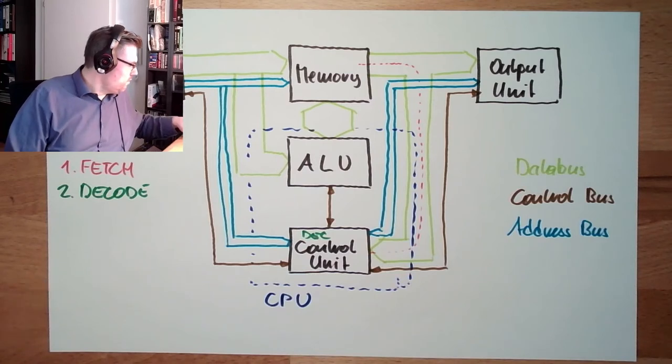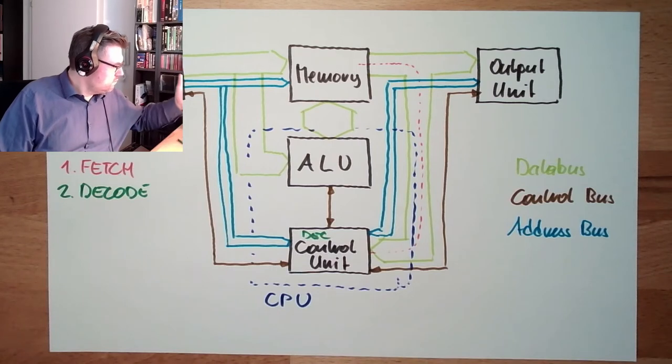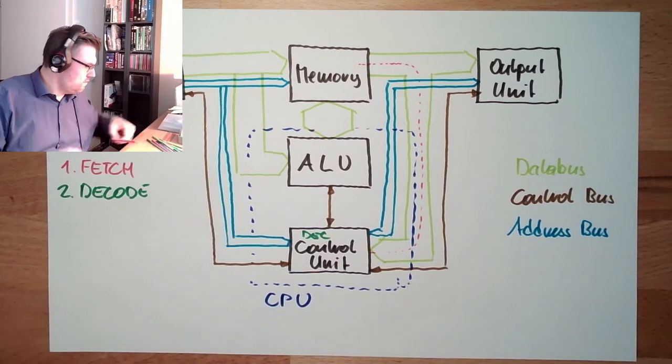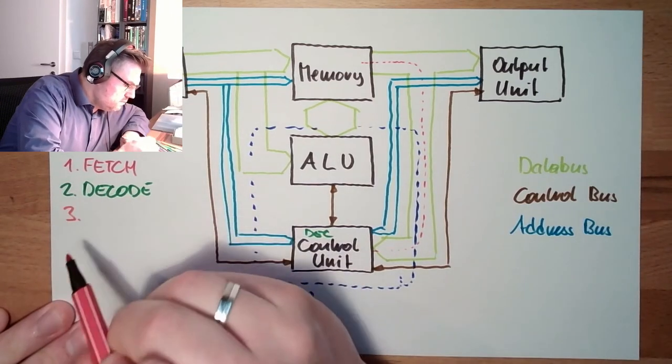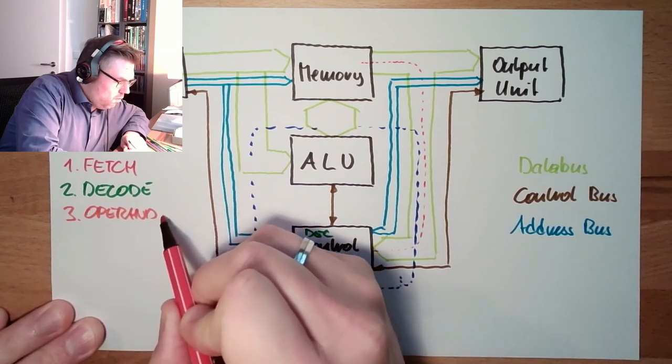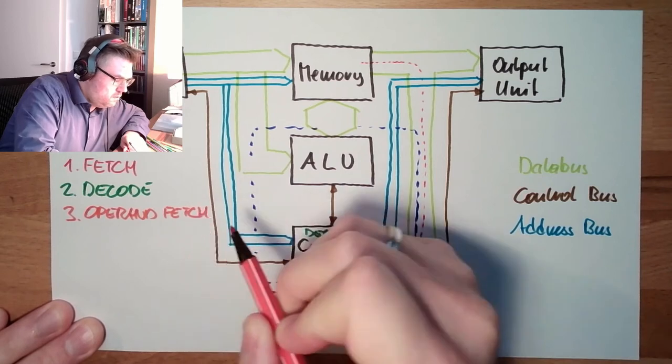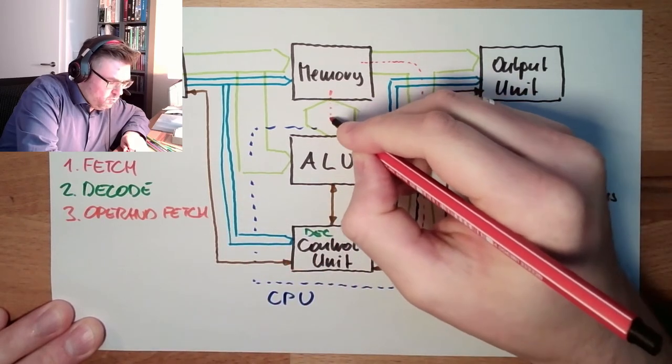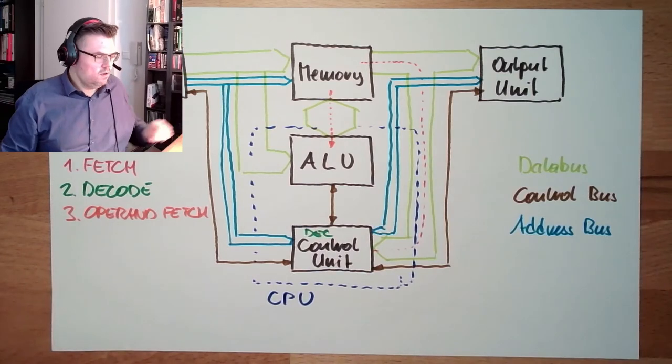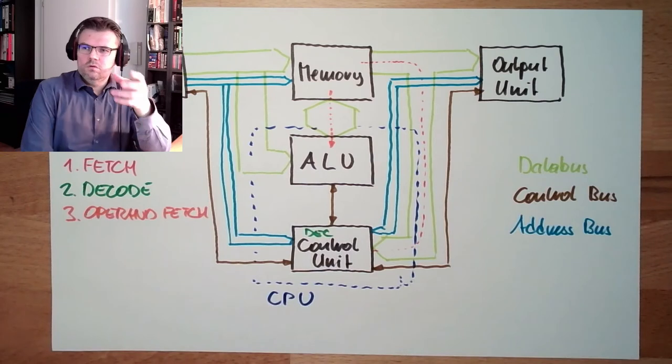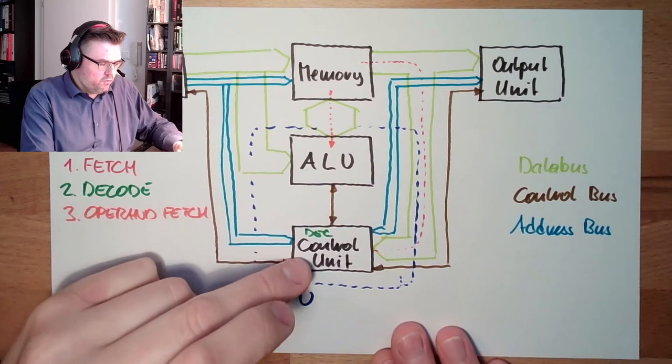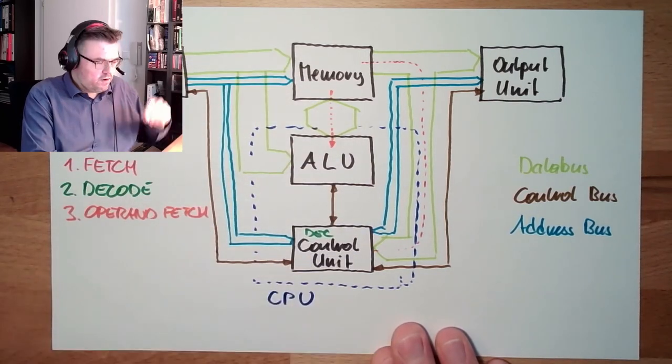So third, operand fetch. The operands will be transferred to the ALU. Now the ALU knows what to do. It gets from the control unit what to do. It gets the operands which are necessary or not, and can do a calculation.